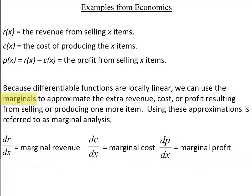When we talk about maximizing profit or minimizing cost, we adopt the perspective that these functions are locally linear. In other words, if we zoom in really, really close, every function basically looks like a line. Since these functions are locally linear, we can use what we call a marginal to approximate the extra revenue, cost, or profit resulting from selling or producing one more item. The marginal ends up being the slope of that line, or the derivative.